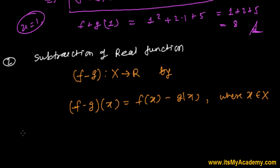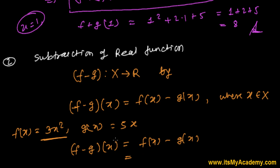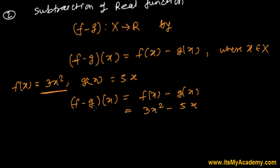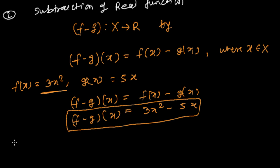Let's take an example. If f(x) = 3x² and g(x) = 5x, then (f - g)(x) equals f(x) - g(x). Since f(x) is 3x² and g(x) is 5x, the difference of the two functions f and g is 3x² - 5x.